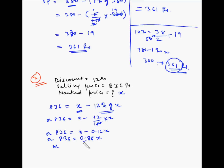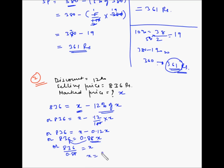Let's bring 0.88 to the other side — since it is multiplication, it becomes division. So 836 divided by 0.88 equals X. Therefore X equals 836 divided by 0.88, which is 950 rupees. This is the marked price on which, when we give a 12% discount, we get a selling price of 836 rupees.